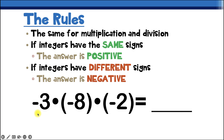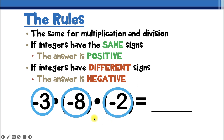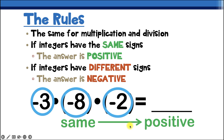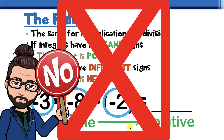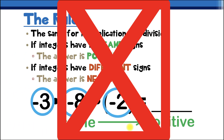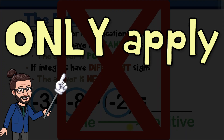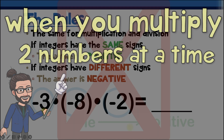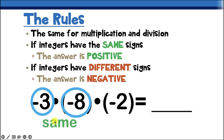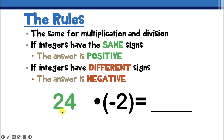Here's our last example — this one's a little tricky. A lot of students would say all three numbers are negative, so the signs are all the same and the answer is positive. That's wrong. These rules only apply when you multiply two numbers at a time. So we start with negative 3 times negative 8. Those signs are the same, so the result is positive. 3 times 8 is 24, giving us positive 24.